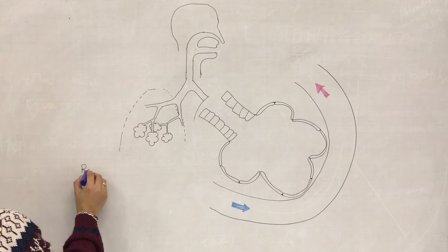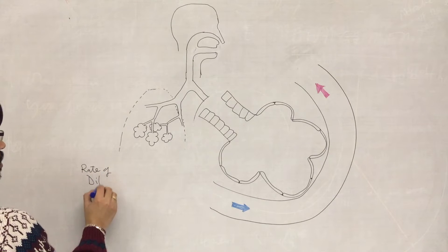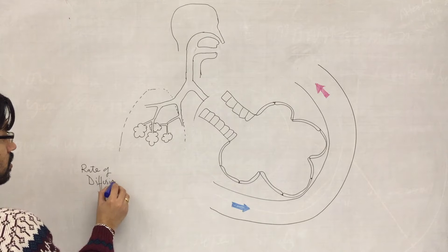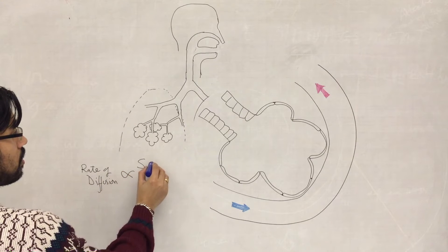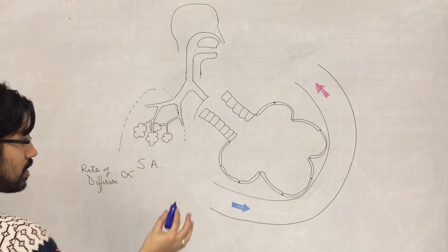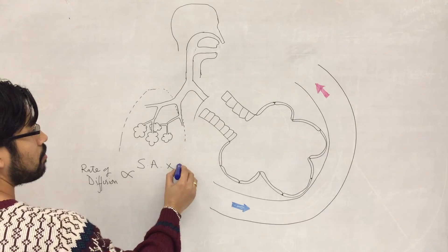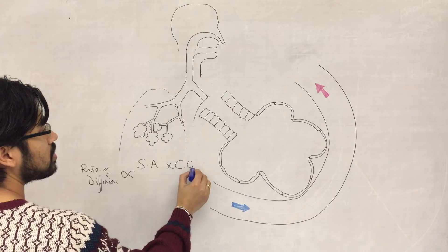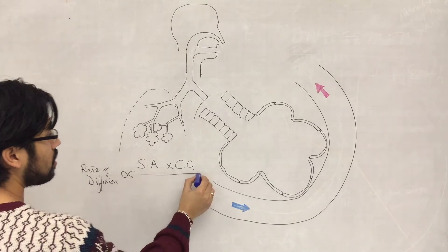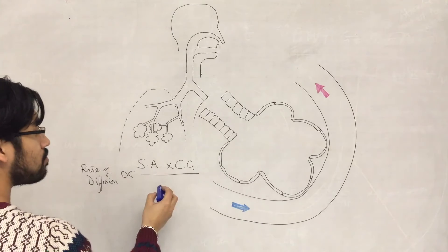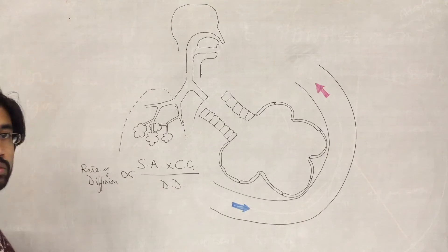The rate of diffusion is proportional to the surface area of the exchange surface multiplied by the concentration gradient it can generate, divided by the diffusion distance — the distance over which diffusion occurs.